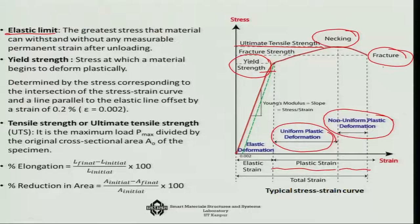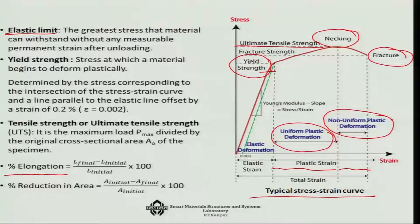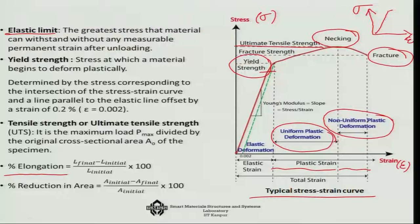Two other important factors are percentage elongation — the ratio of the change in length to the initial length — and similarly for area, which tells us how compliant the material is. This is a typical stress-strain curve for a ductile material. For a brittle material, the sigma-epsilon curve is essentially a single line with perhaps some slight non-linearity, then it sharply fails — showing no plastic strain or plastic deformation.